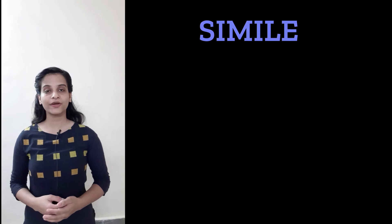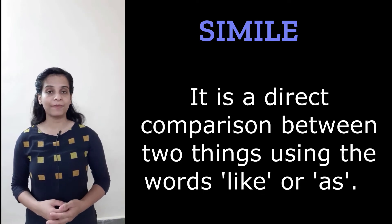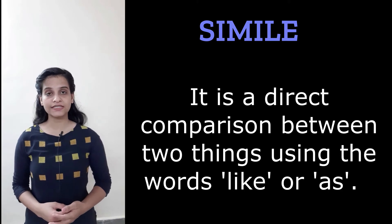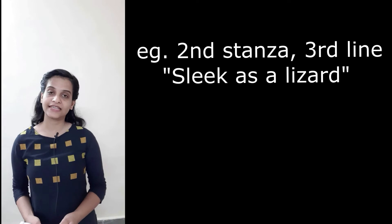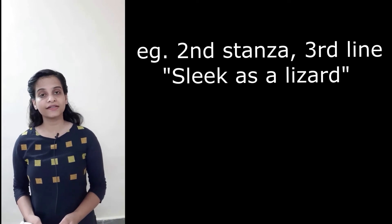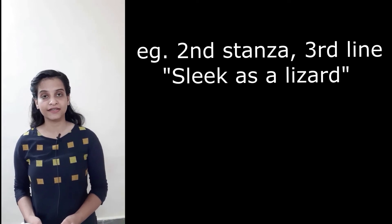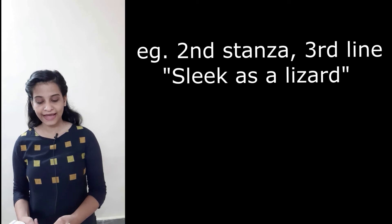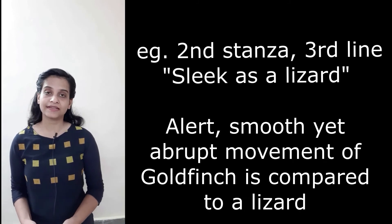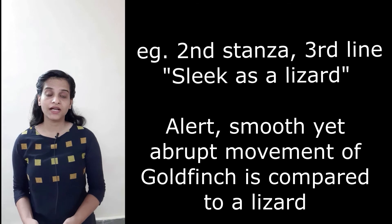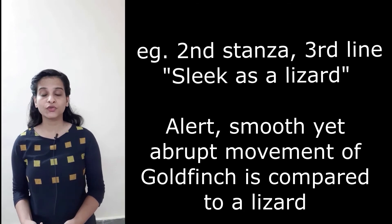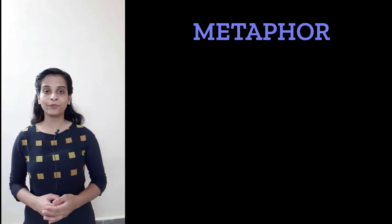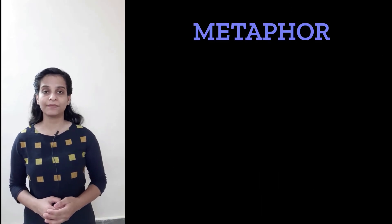Now let's move on to the poetic devices used in the poem. The first poetic device is simile — a direct comparison between two things using the words 'like' or 'as.' An example from the third line of the second stanza is 'sleek as a lizard,' where the poet has compared the smooth, alert but abrupt movement of the bird to a lizard. The second poetic device is metaphor.